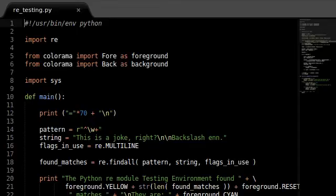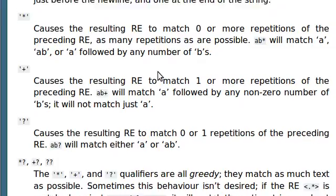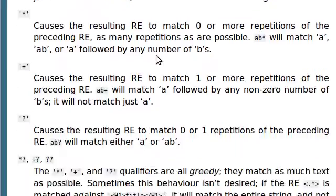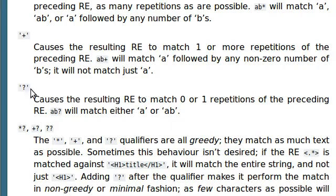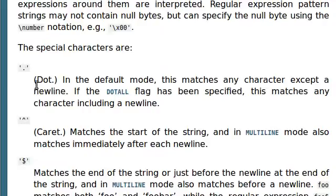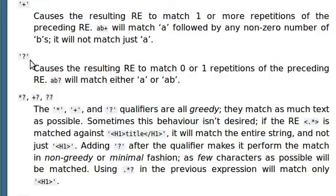Welcome back everyone. We're going to jump right back into the Python RE regular expressions module. In this video, I'm going to be showing you the interesting functionality of the question mark. The question mark will cause the remaining regular expression to match 0 or 1 repetitions of the preceding regular expression. So the pattern AB? will match either A or B. It's sort of like saying that the previous thing you match in your regular expression is optional.